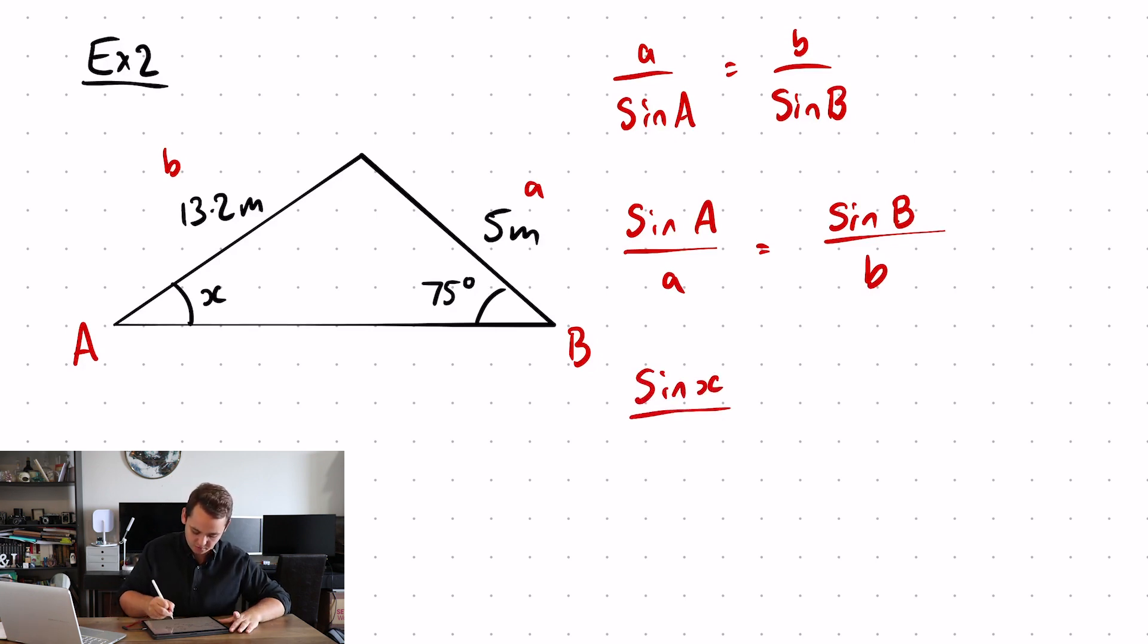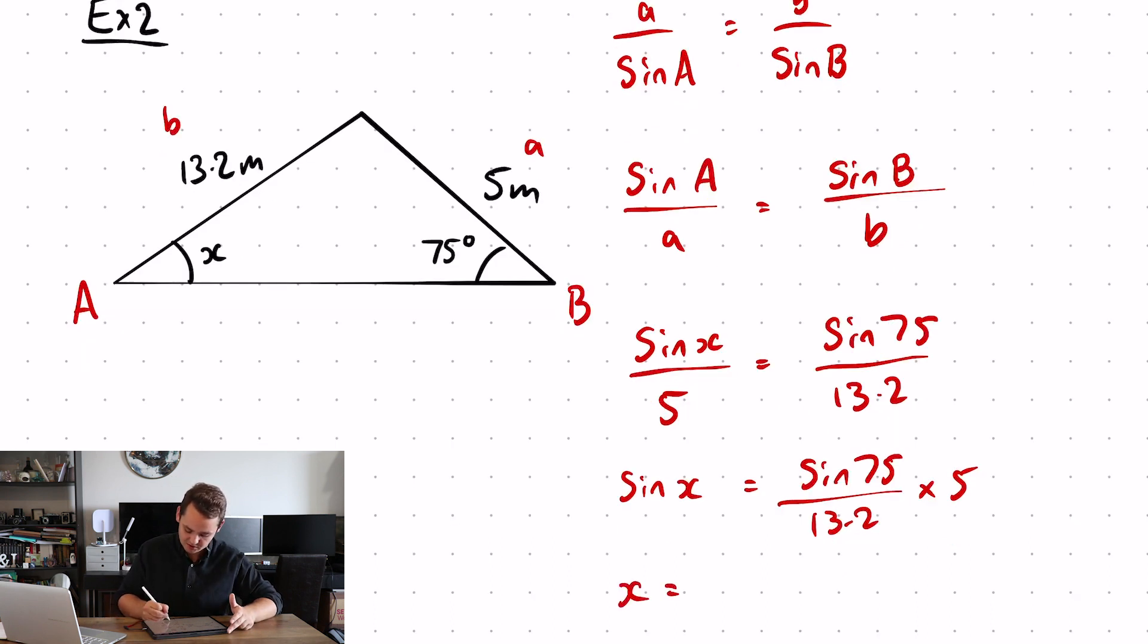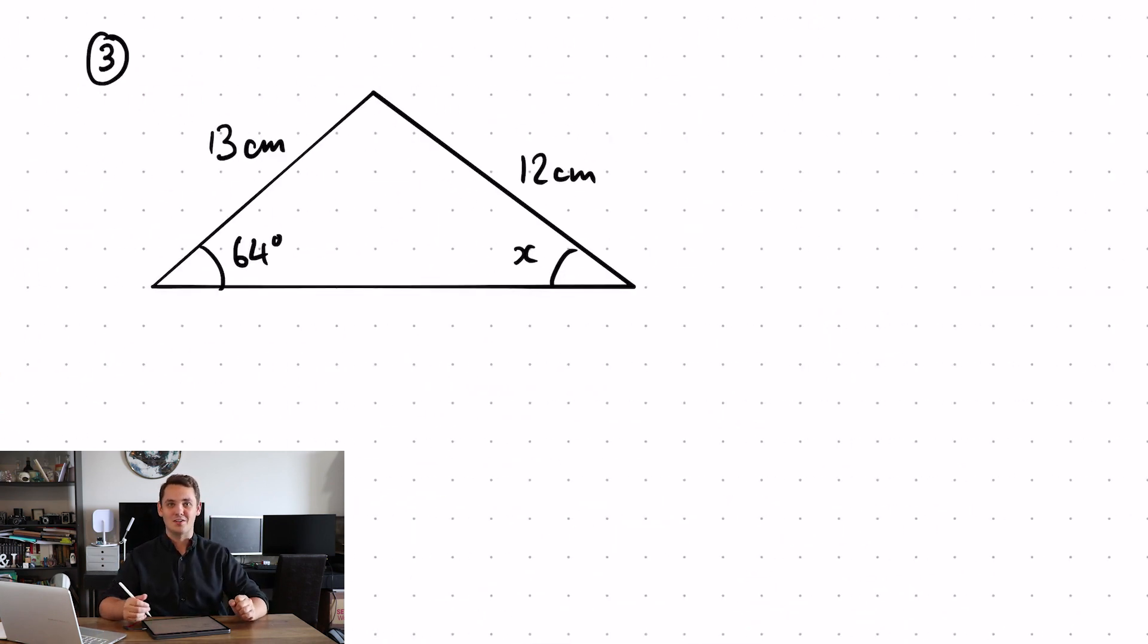So sine x over 5 is equal to sine 75 over 13.2. Again, we'll try to get x by itself. So the first step is to get rid of this divide by 5 by multiplying by 5. So sine x is equal to sine 75 over 13.2 times 5. But x is not by itself yet. At the moment, we have sine x. So now we need to get rid of the sine part of this. So to get rid of sine, what are we going to do? Inverse sine. So x is equal to the inverse sine of sine 75 over 13.2 multiplied by 5, which gives you an answer of 21.5 degrees. Do you think you got it? Have a go at this question to test yourself out. Just pause the video and we'll be right back.